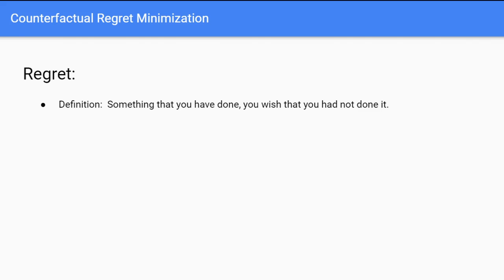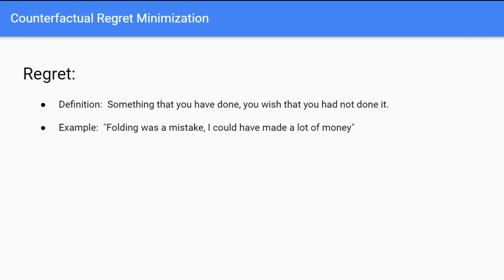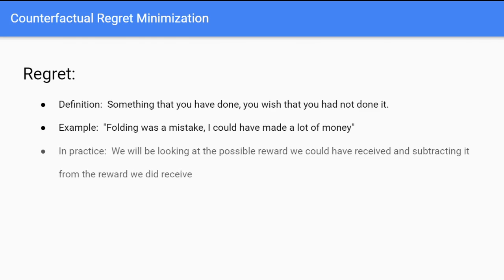Next we have 'regret,' which is something that you have done that you wish you had not done. An example in poker would be: maybe you lost $20 because you played wrong, or you folded when you should have raised and could have made more money. In the algorithm, we'll look at all the possible rewards we could have received and subtract the reward we actually did receive — that is how we calculate regret.